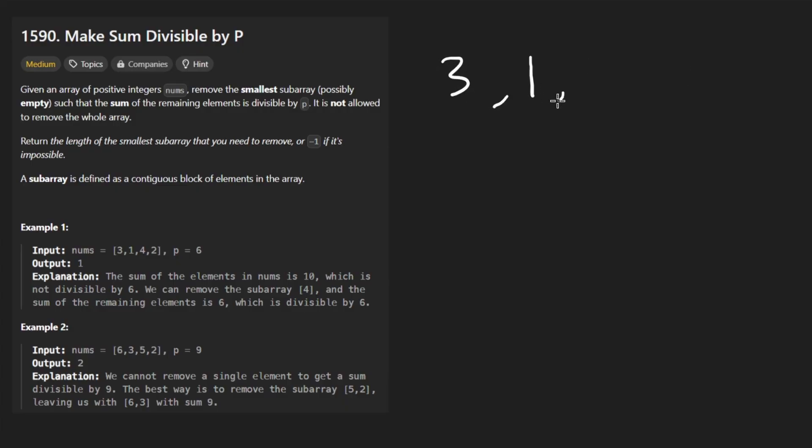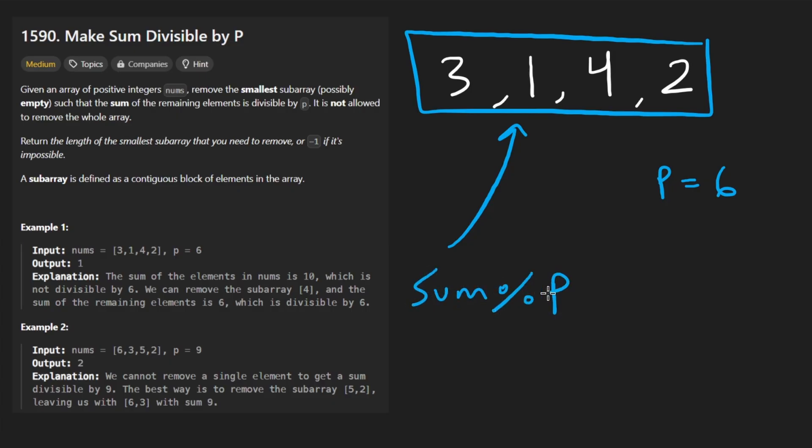We're given an array of integers and a separate parameter called P. The idea is that we want this array to be divisible by P. In other words, if we compute the sum of the entire array and then mod it by P, we expect the remainder to be zero. Now it's possible the entire array itself is divisible by P, in which case we would return zero because we had to remove zero elements. Otherwise, we have to potentially remove some elements to make it divisible by P. It's also possible that it's not possible for us to do that, in which case we return negative one.